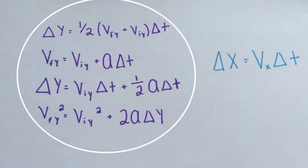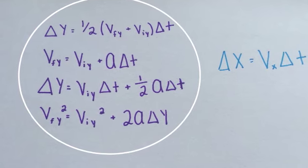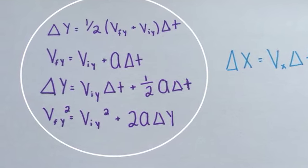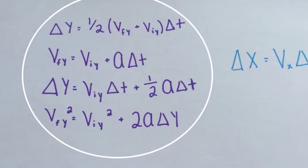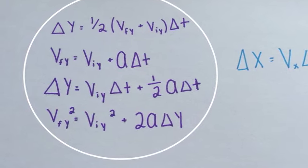The vertical motion of the basketball can be found with the kinematic equations. The variables in these equations include acceleration, vertical displacement, initial velocity, final velocity, and time.